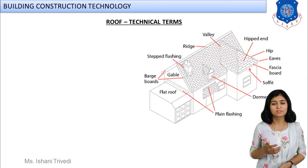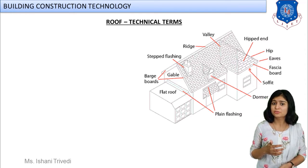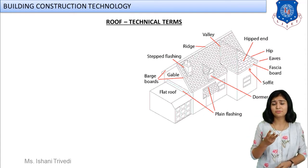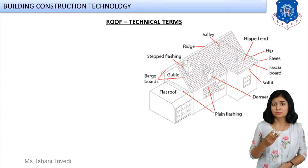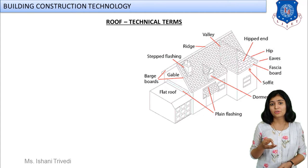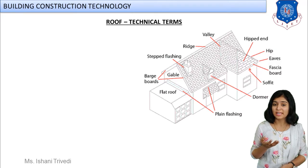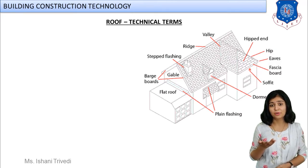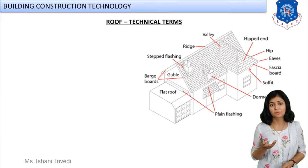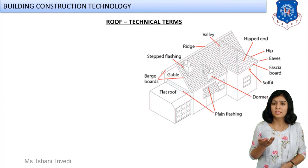Such type of roof is very common in those countries and in our country also. The third type of roof discussed was the curved roof — domes, or curved roofs used in factories. Also for architectural purposes, to provide an attractive appearance, curved roofs can be provided.